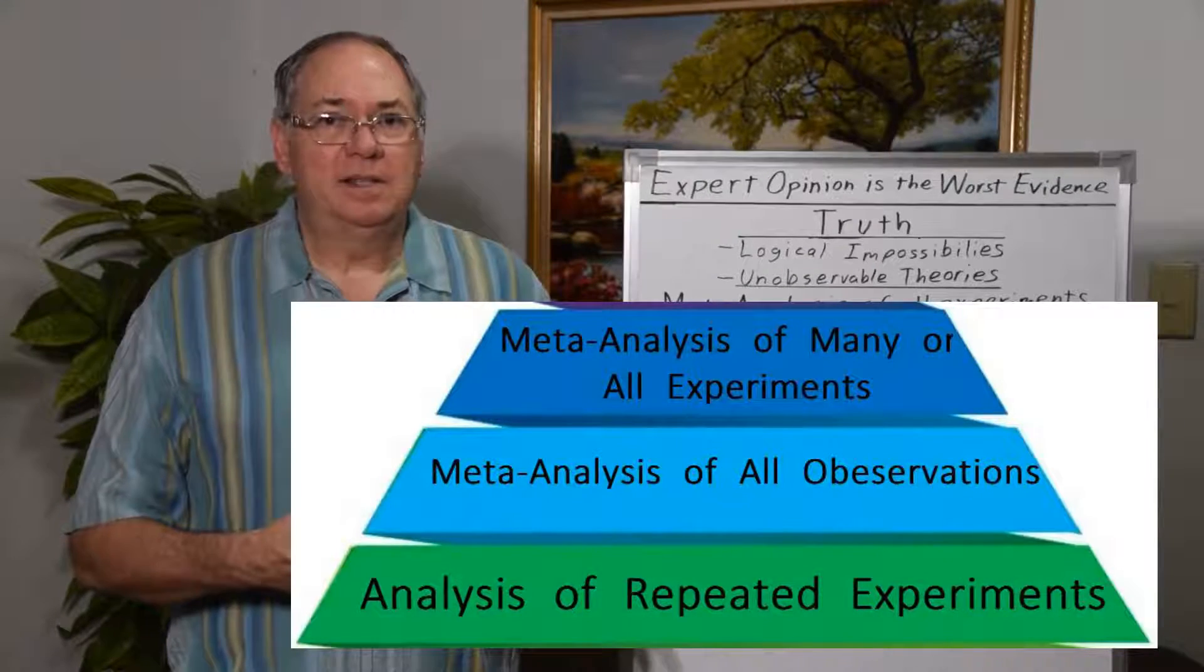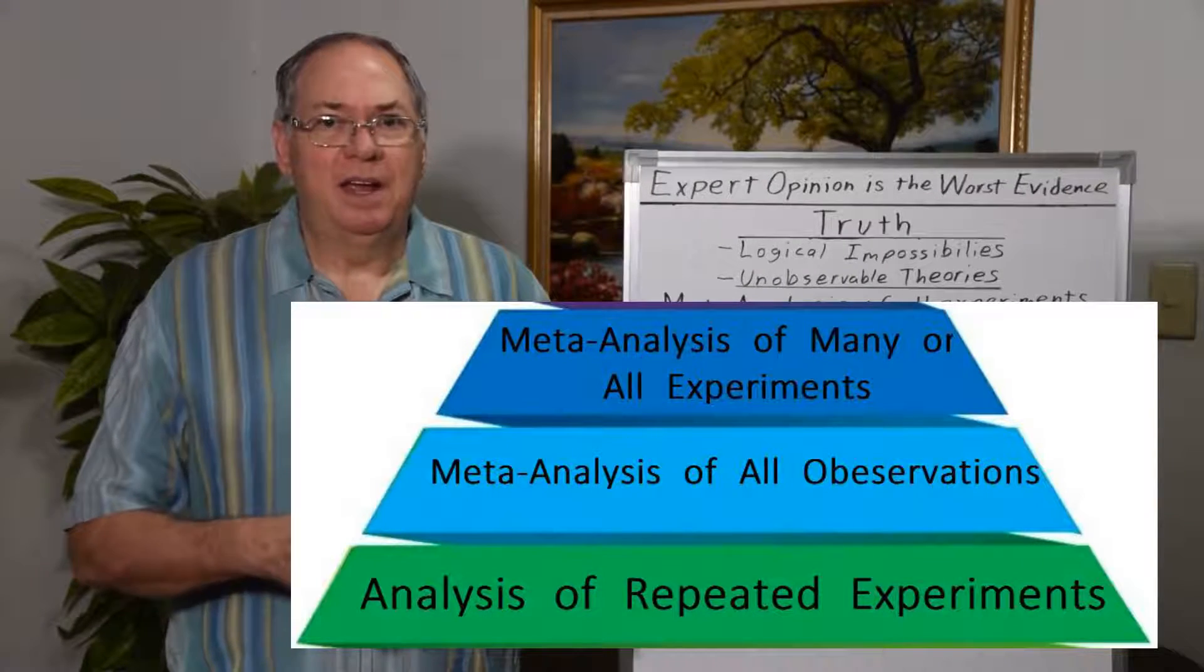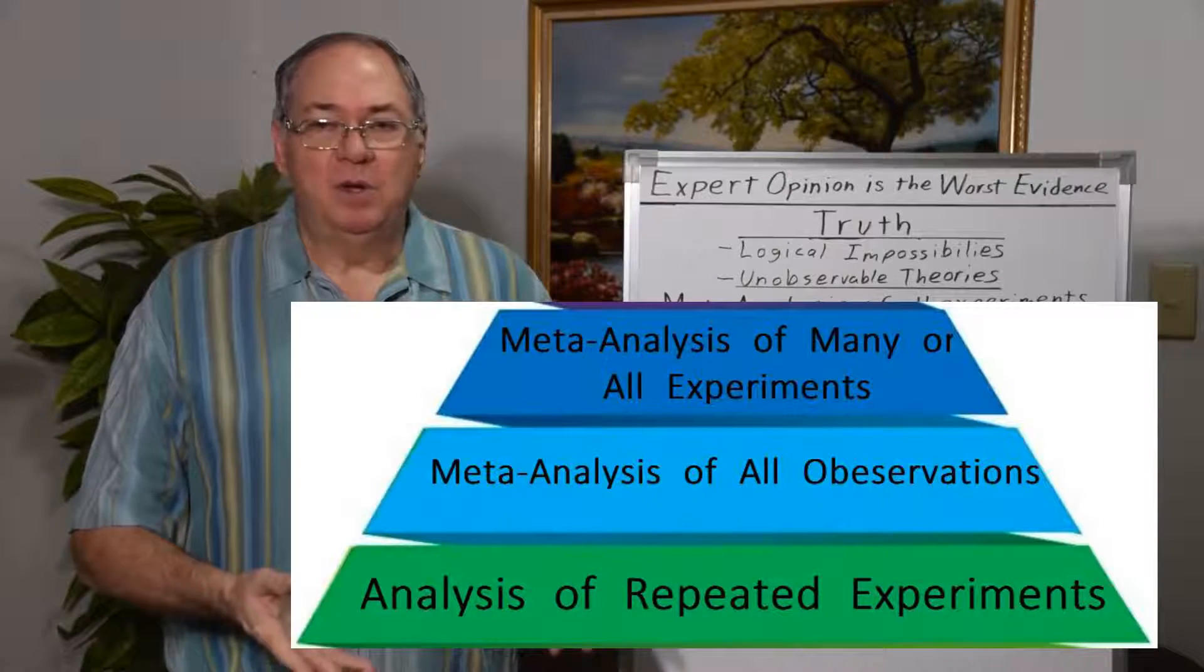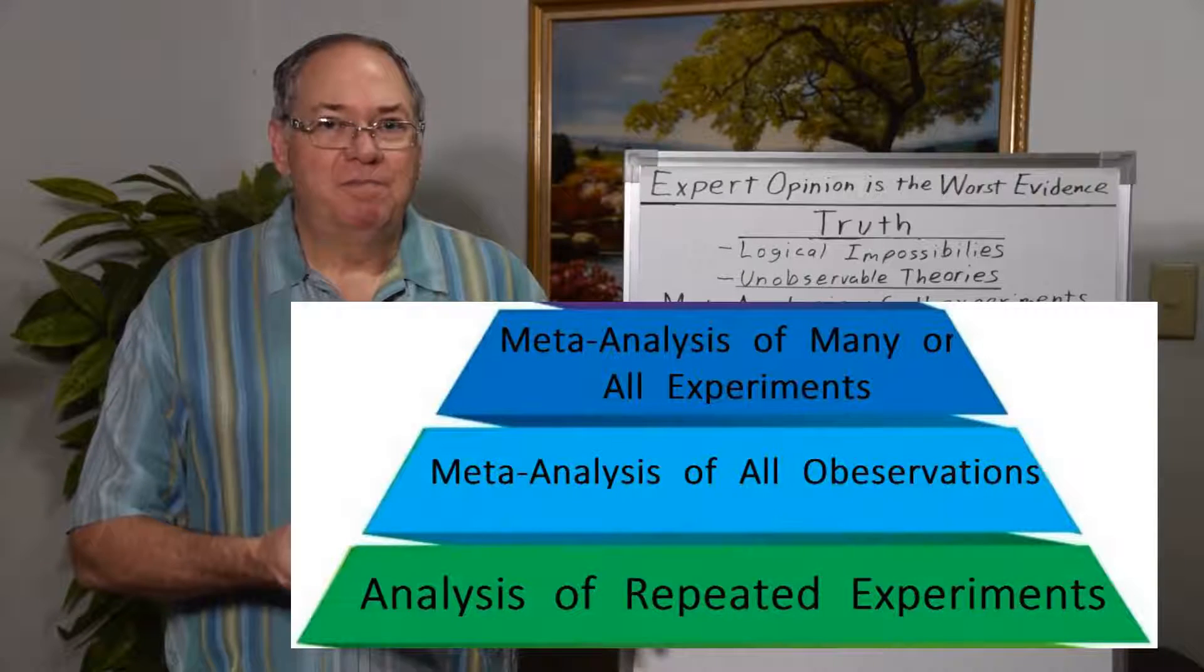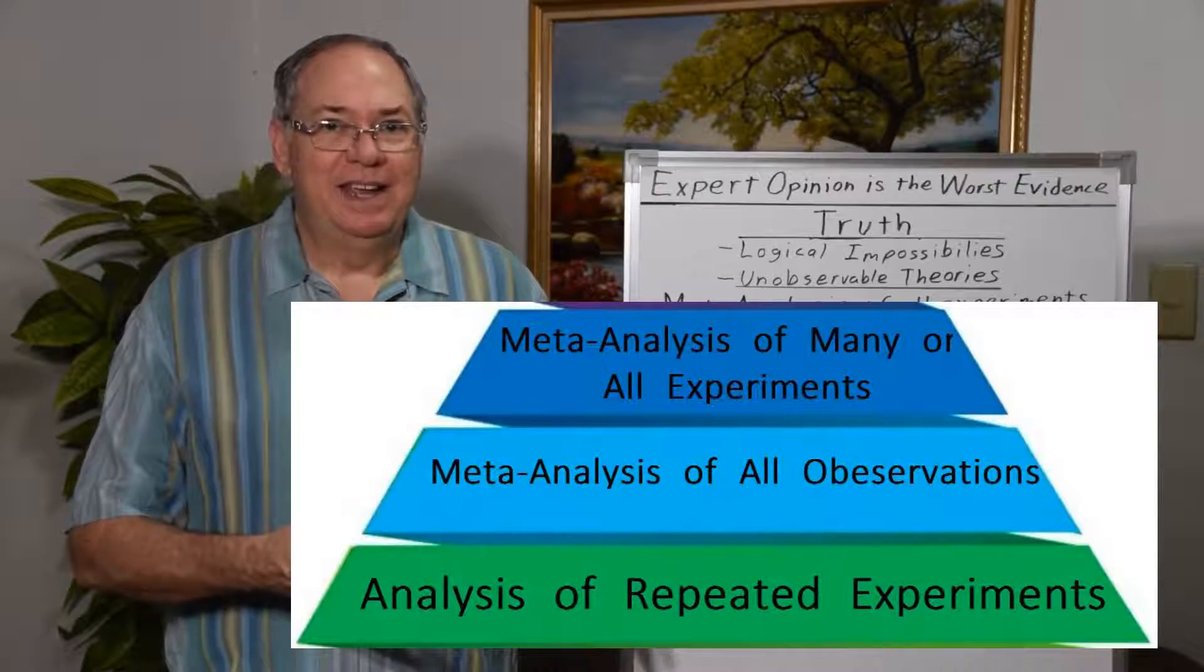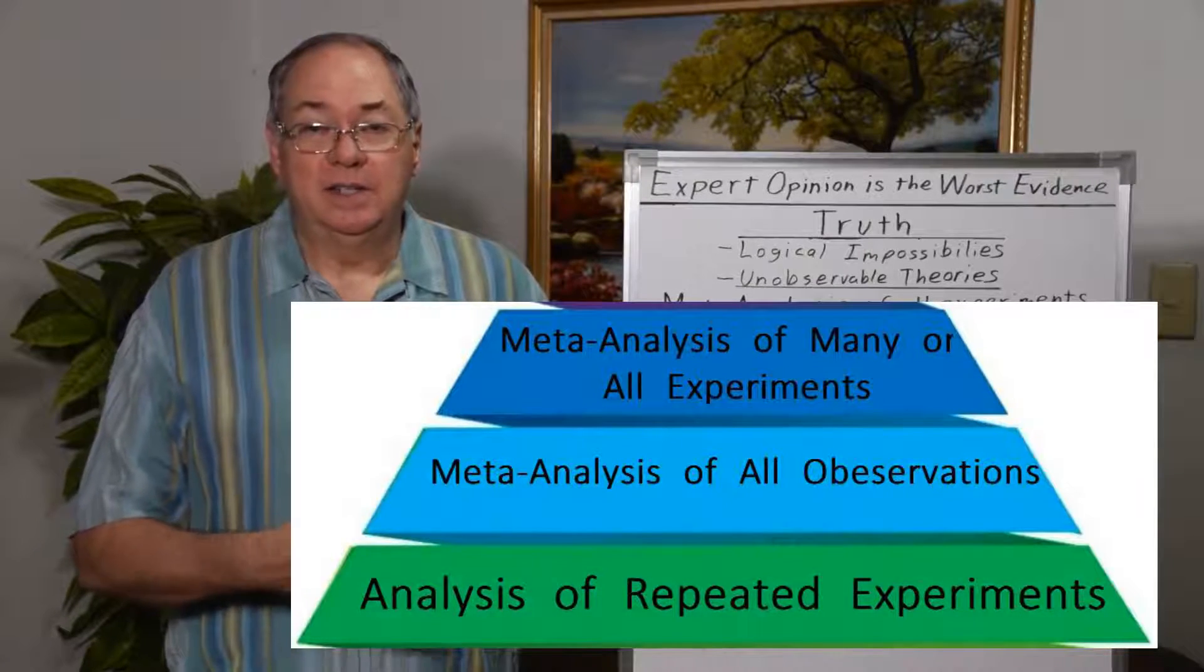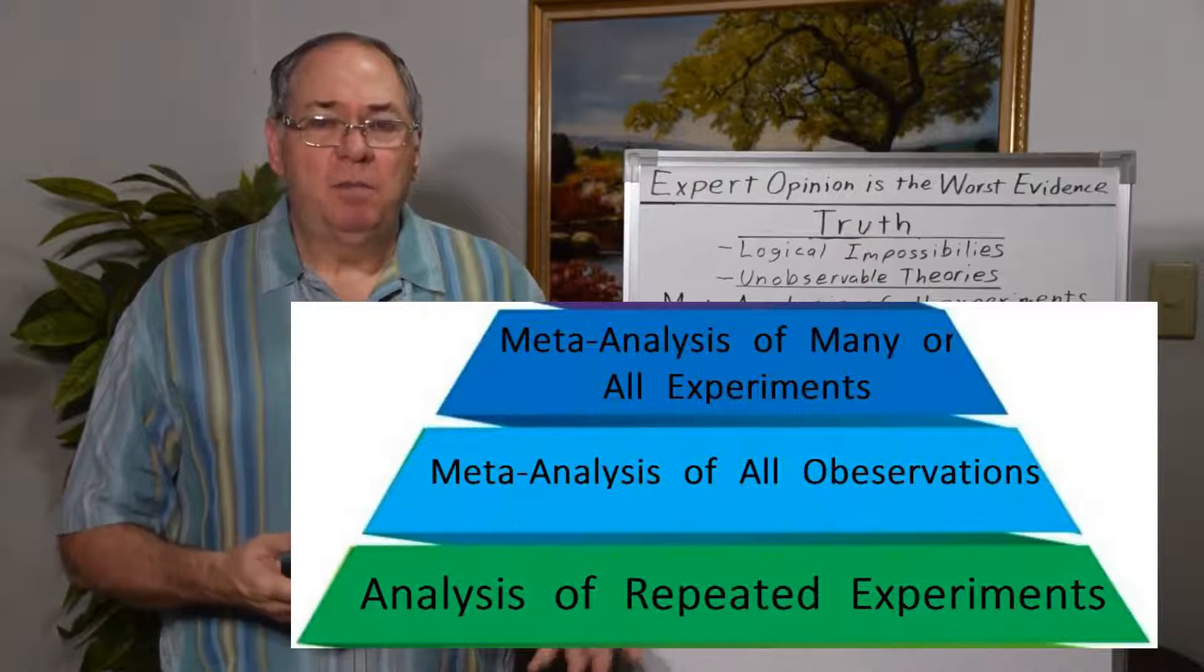We see meta-analysis of experiments when people are trying to come up with the accepted value of a constant, where they look at the most important experiments and then try to average out the number and then eliminate experiments that aren't consistent for some reason.